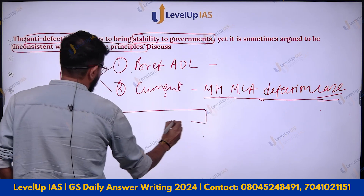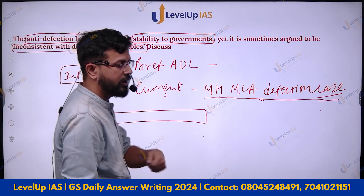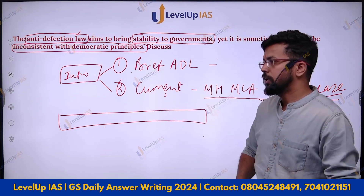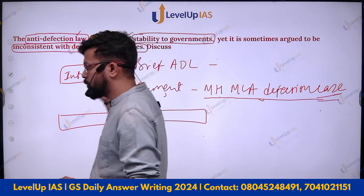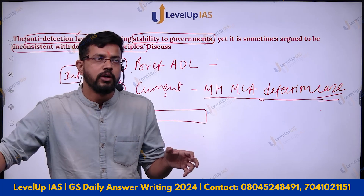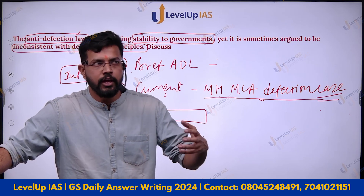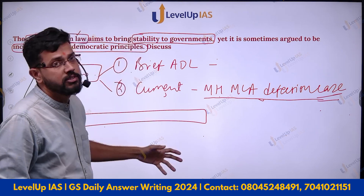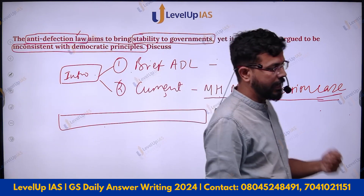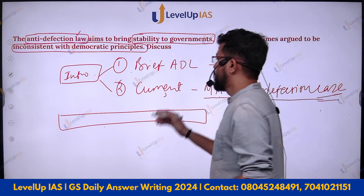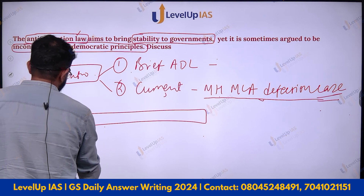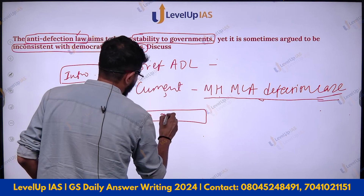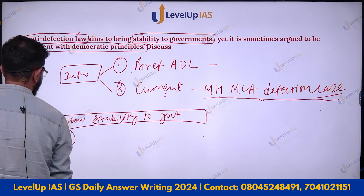It is very important to make headings and subheadings so that the examiner will know which part of the question you are addressing. Try to take terms from the question itself, as this will show congruence to the examiner — a flow that you are writing what is being asked. So here you can write: 'How it is ensuring stability to the government.'